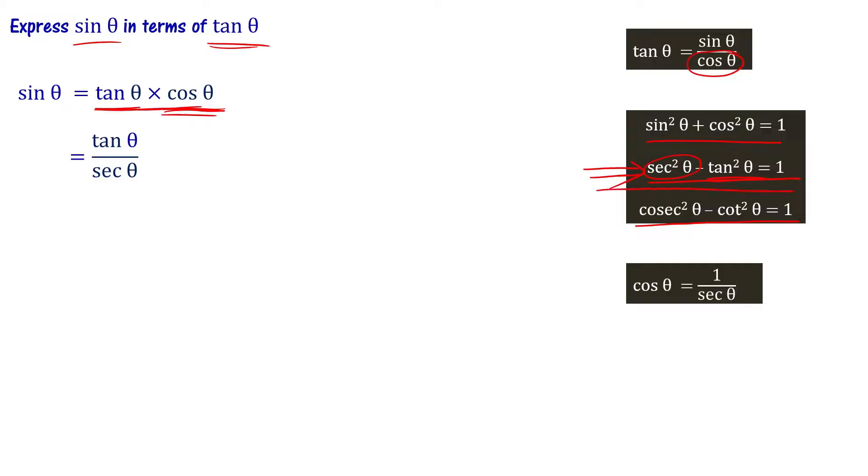Let us make use of this identity: sec square theta minus tan square theta equals 1. Now, sec square theta equals 1 plus tan square theta.